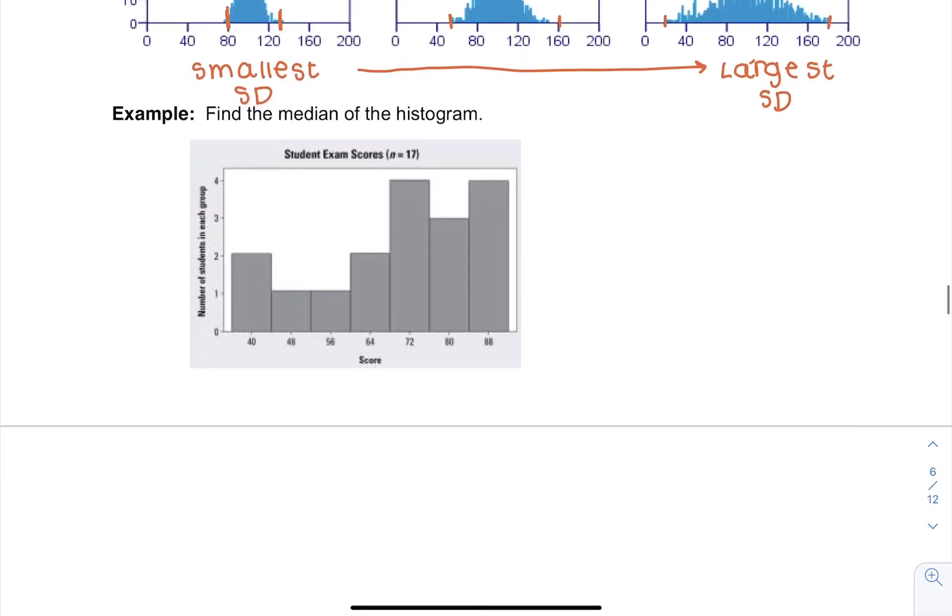Now we have one more example. So in this we have a histogram of student exam scores. So we have the score on the bottom and then we have the number of students in each group. So how many scored in that category.